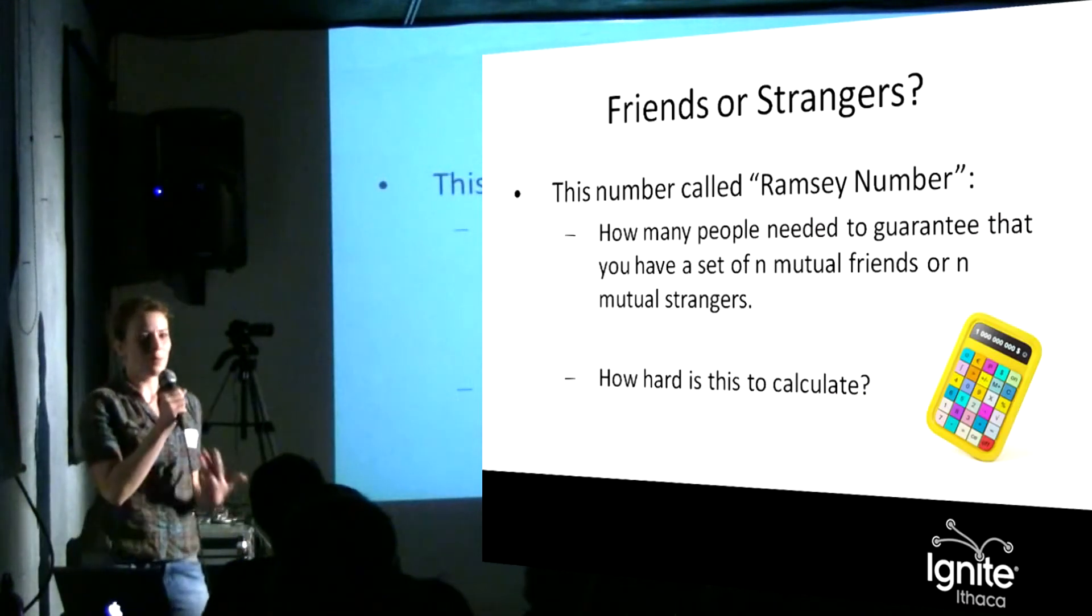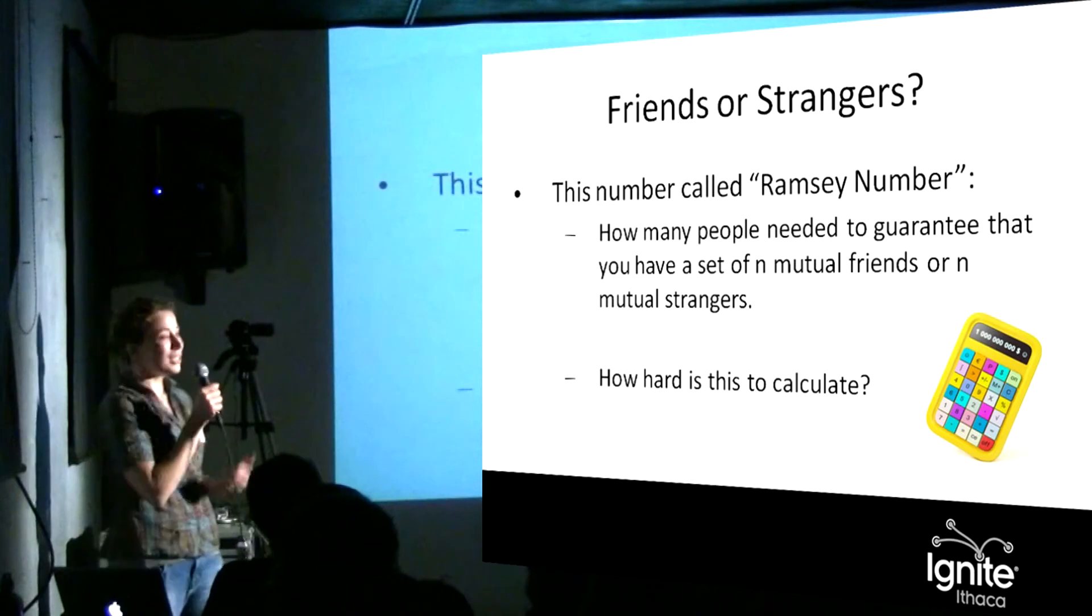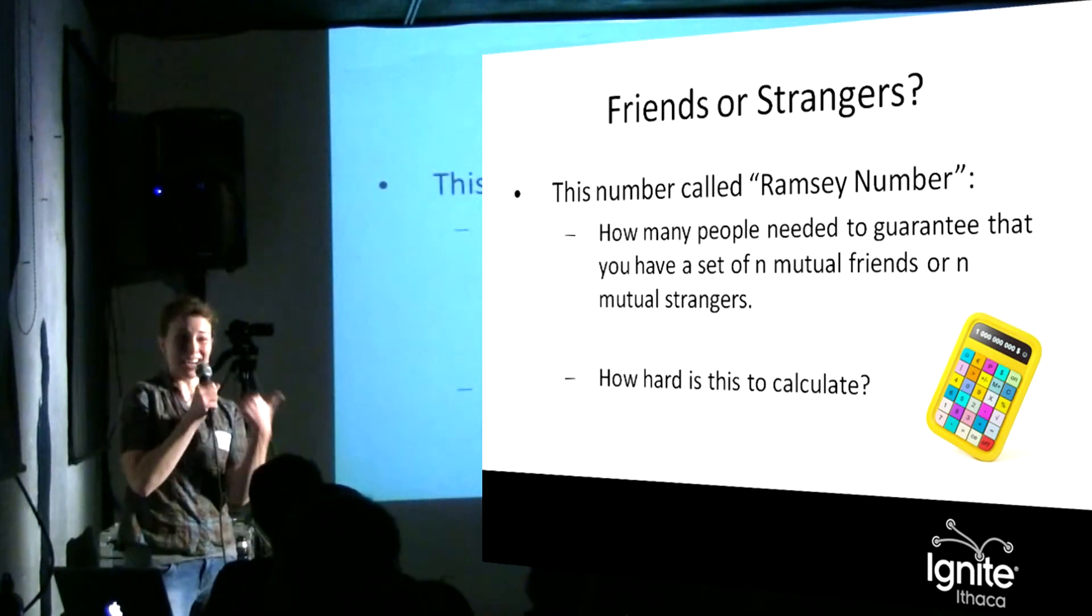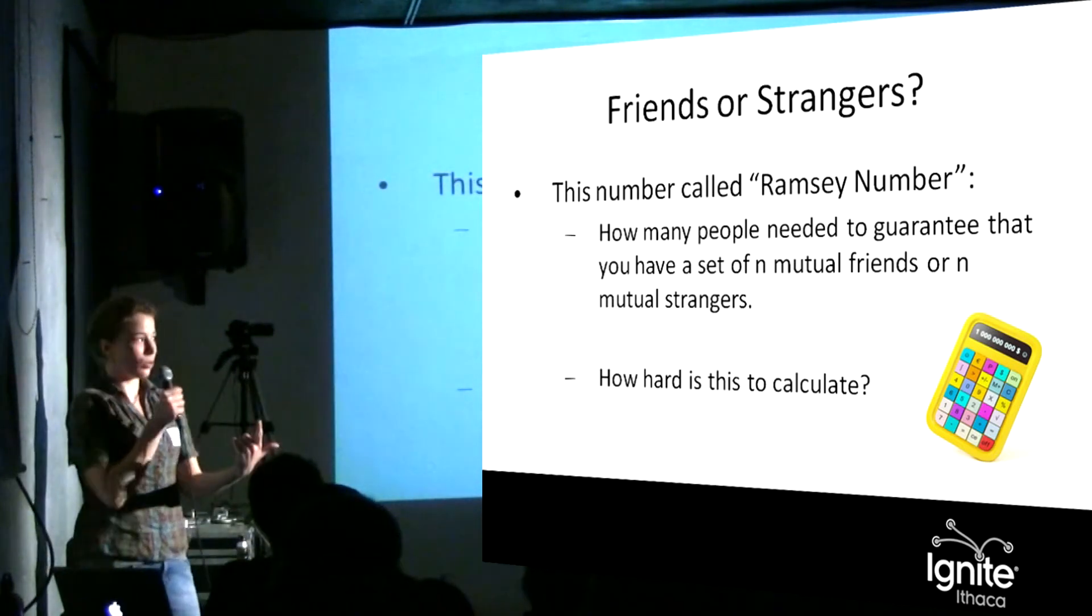So these numbers are called Ramsey numbers: how many people would I need to have to guarantee n people either have never met any of them, or all know each other as a group?